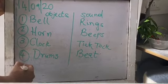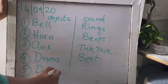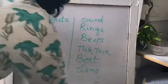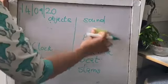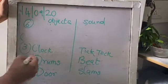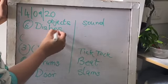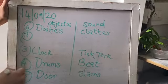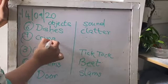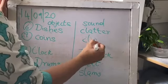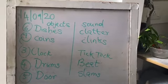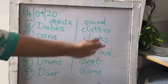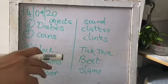Fifth object is door — slams. Sixth object is dishes — clatter. Seventh object is coins — clinks. These seven objects you will write on a piece of paper with two columns — objects and sound — and after writing it, take a photo and send it to me.